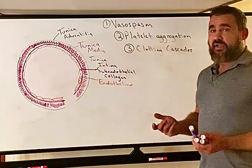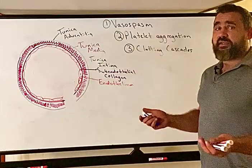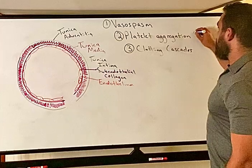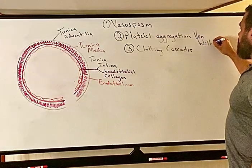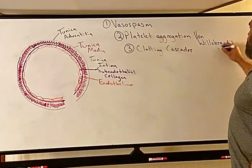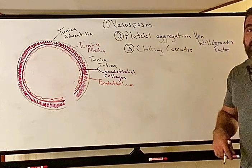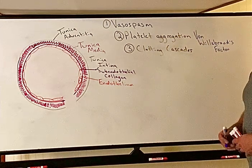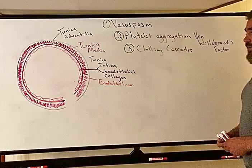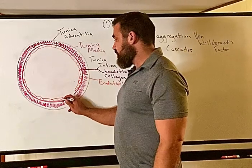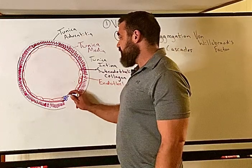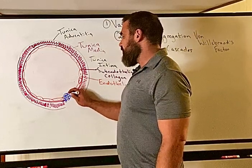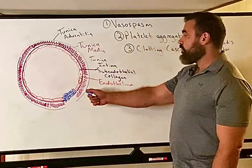Platelets are little fragments of megakaryocytes floating in the blood. Once they are exposed to subendothelial collagen — specifically a protein called von Willebrand's factor — they become activated. In von Willebrand's disease, there are mutations or insufficient amounts of this factor, causing a bleeding disorder. When von Willebrand's factor is exposed, platelets attach, become activated, release serotonin, increase intracellular calcium, change shape, and stick together — that is platelet aggregation, forming a platelet plug.